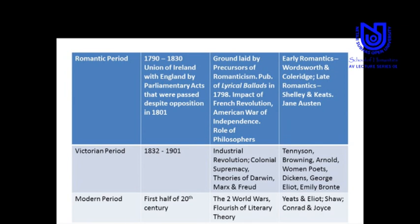Then follows the Romantic period, the ground for which had already been laid by the precursors, and chronologically dating to 1798 — the year significant because of the joint publication of the Lyrical Ballads by Wordsworth and Coleridge. This is the movement that registers several global movements for the first time. We are not just talking of Europe and the French Revolution — there is also the American War of Independence, the role of Tom Paine, the role of philosophers in the French Revolution — all of which cumulatively went on to provide a democratic spirit to Romantic poetry, something strikingly absent in the neoclassical period.